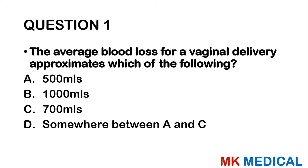Question 1: The average blood loss for a vaginal delivery approximates which of the following? A — 500 mls. B — 1000 mls. C — 700 mls. D — somewhere between 500 to 700 mls. Normally, there should be about 500 mls lost in a vaginal delivery. The answer is A.